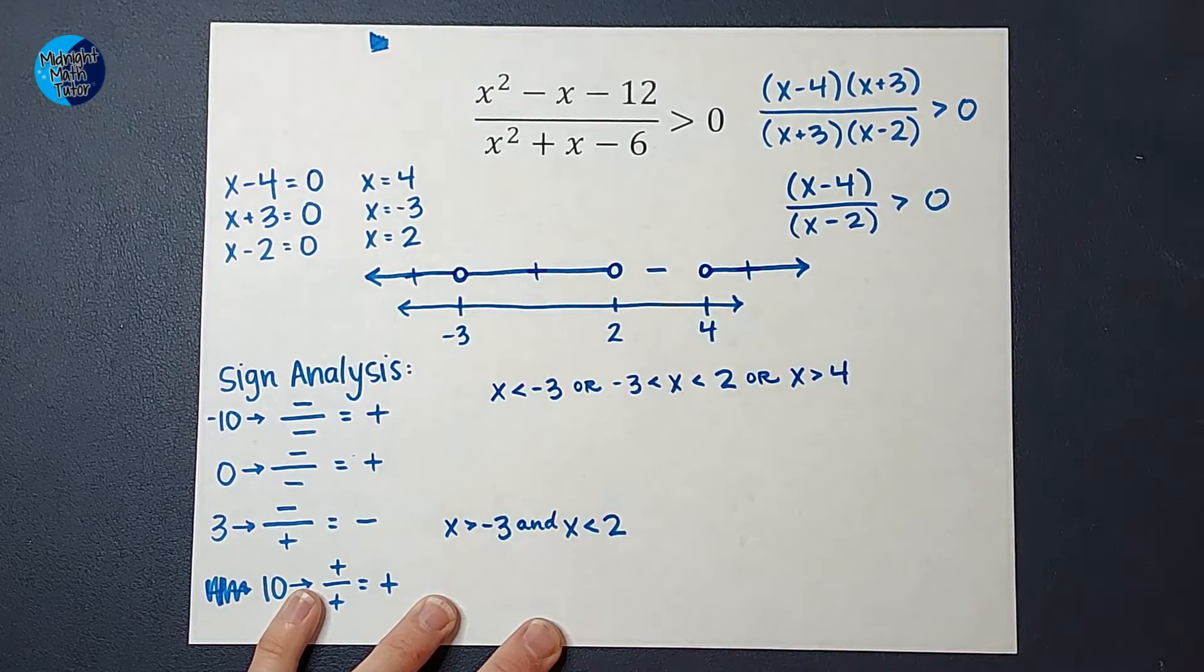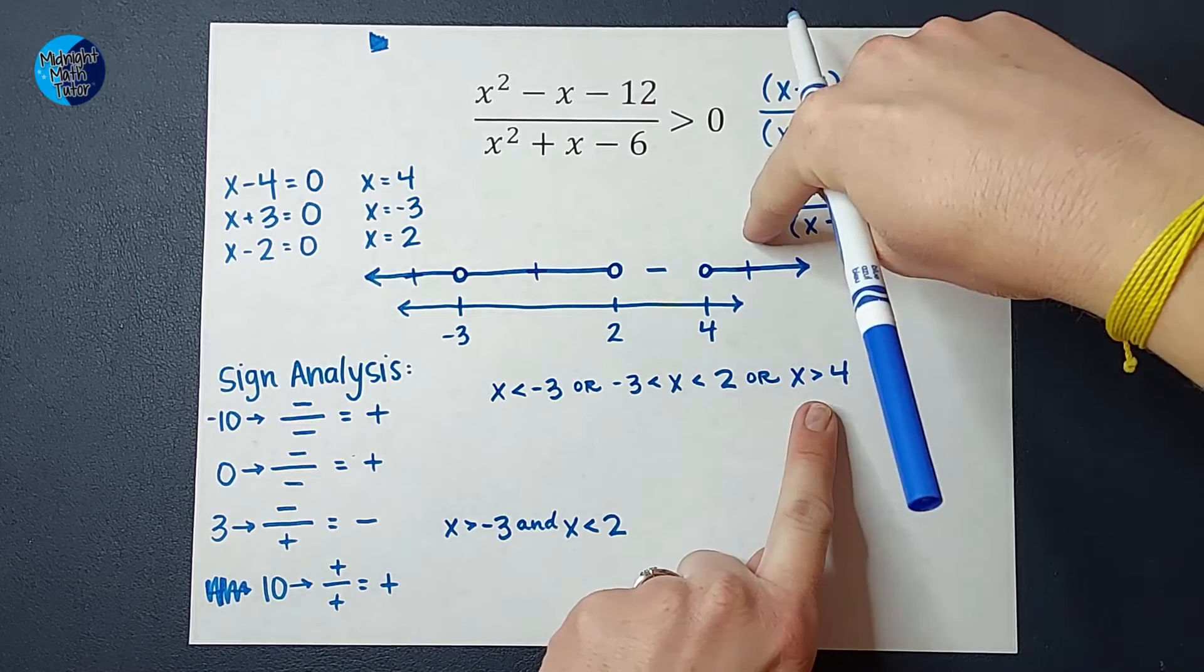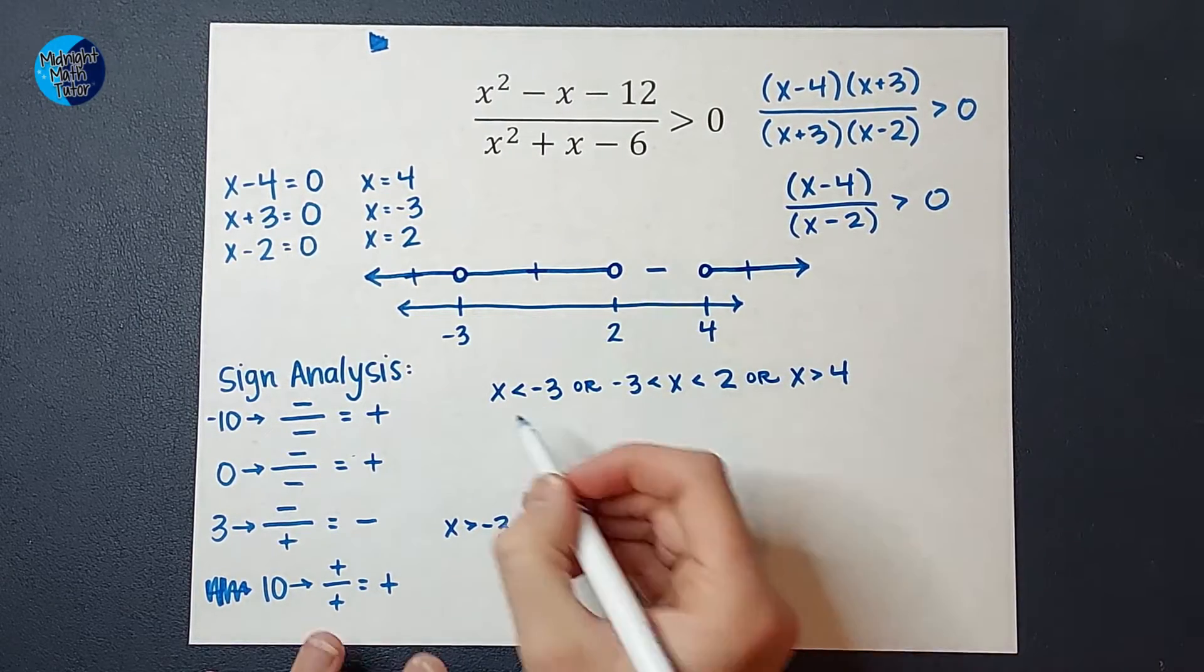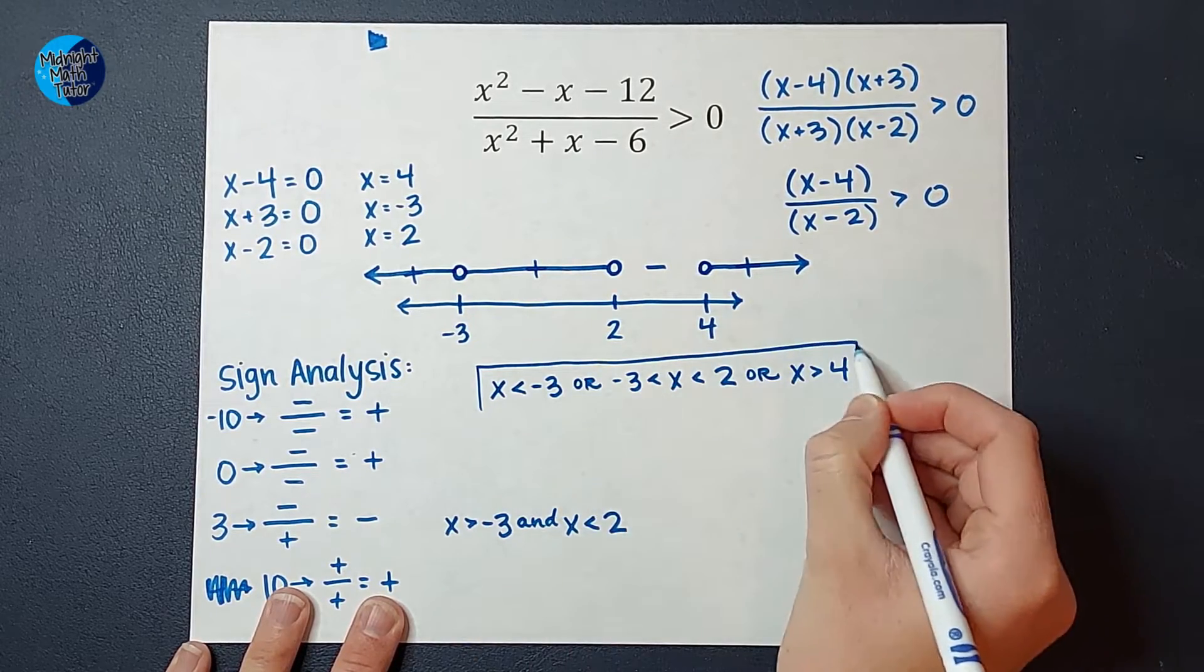Okay, so that represents that one, this one, or x can also be greater than 4. Look at that. See all that? That represents that, that, and that. You'll notice they're all less than or greater than, not equal to, because of the open circles. Alright, so that is my answer.